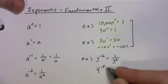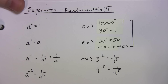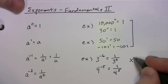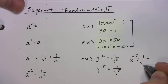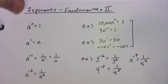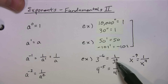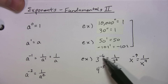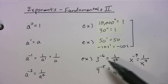Four to the negative five is one over four to the fifth power. With a variable: x to the negative nine is one over x to the ninth power. Just to recap, the negative exponent tells you put it in the denominator and raise the number to the positive exponent. This negative exponent has nothing to do with the sign of the number.